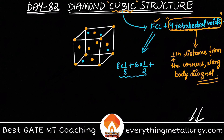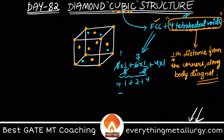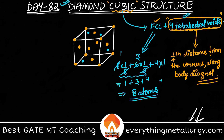All these 4 atoms are completely lying inside the unit cell, so their contribution is 4 × 1. From the FCC lattice: 8 × (1/8) = 1, and 6 × (1/2) = 3, plus 4 from tetrahedral voids — so 1 + 3 + 4 gives you 8 atoms present in a unit cell of diamond cubic structure.